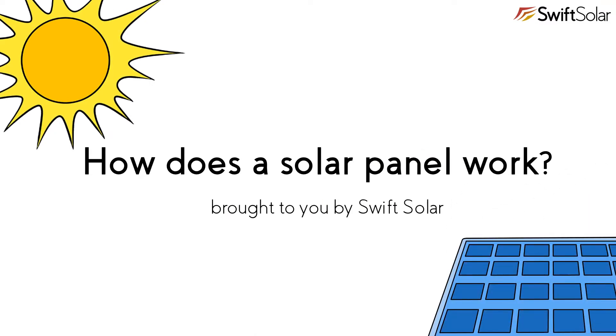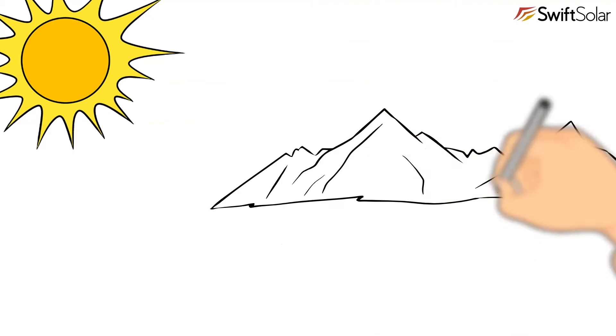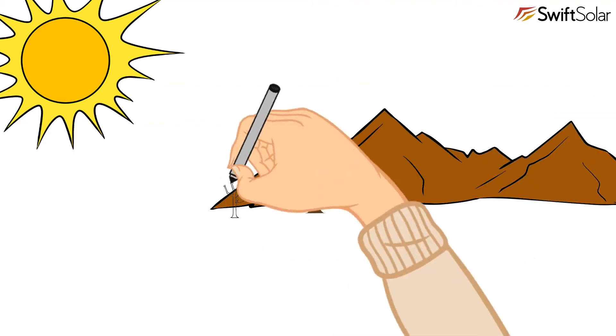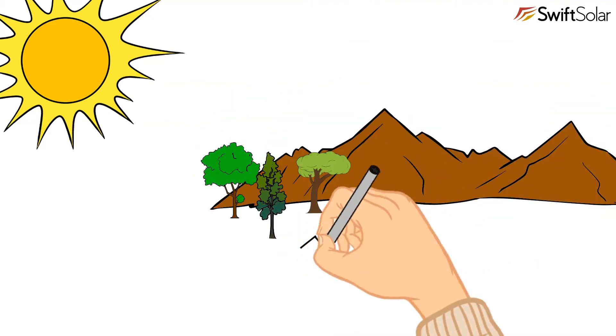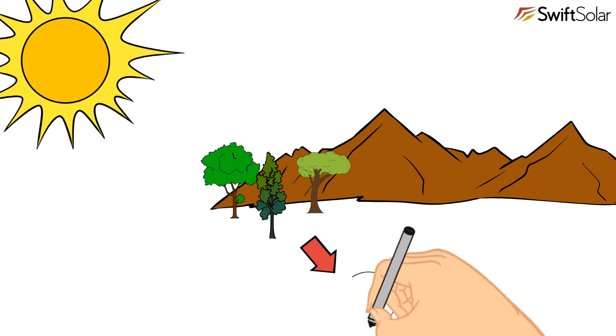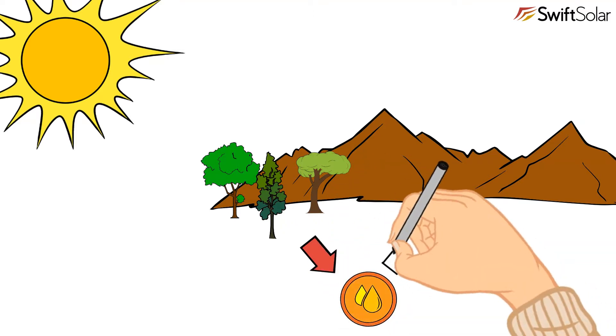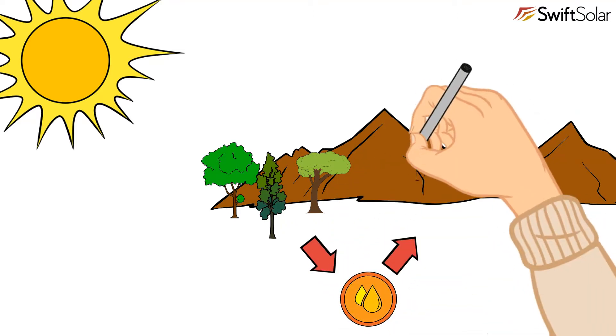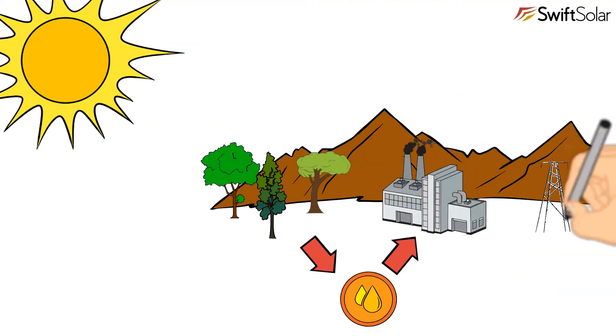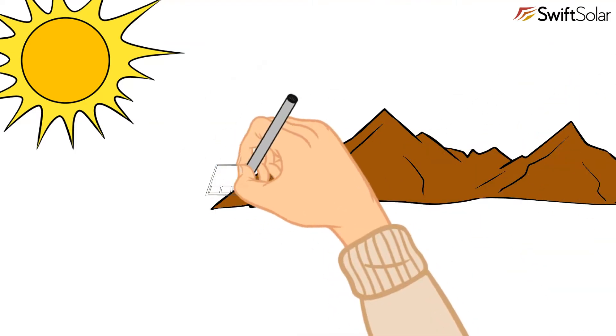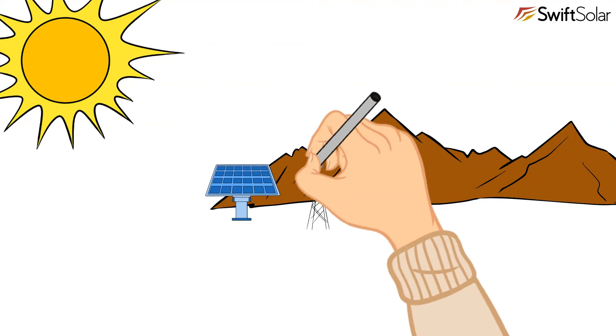Almost all the electricity used in the world today ultimately comes from one source: the sun. Oil, coal, and gas come from long-dead plants and animals that harvested the sun's light to grow. We dig it up and burn it in power stations to generate electricity. Using solar panels is a way to turn sunlight straight into electricity.